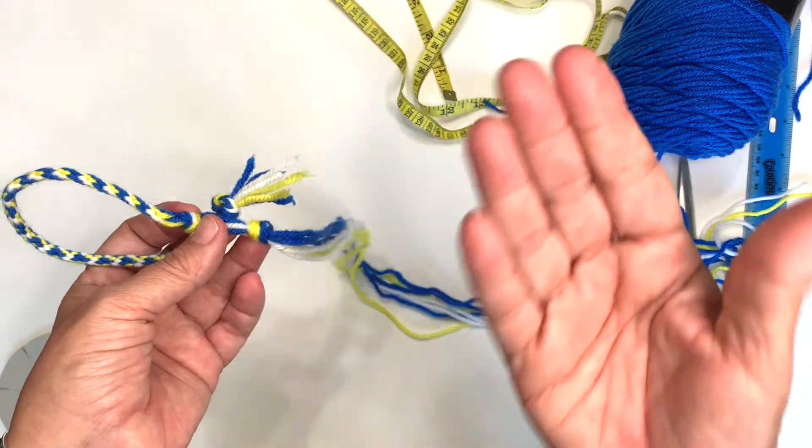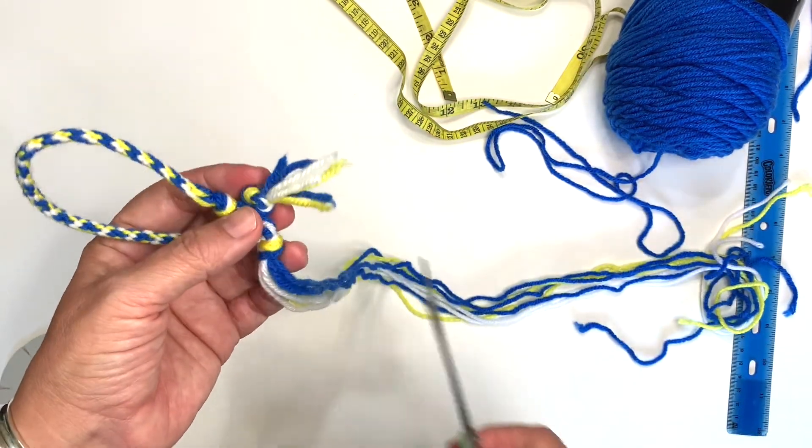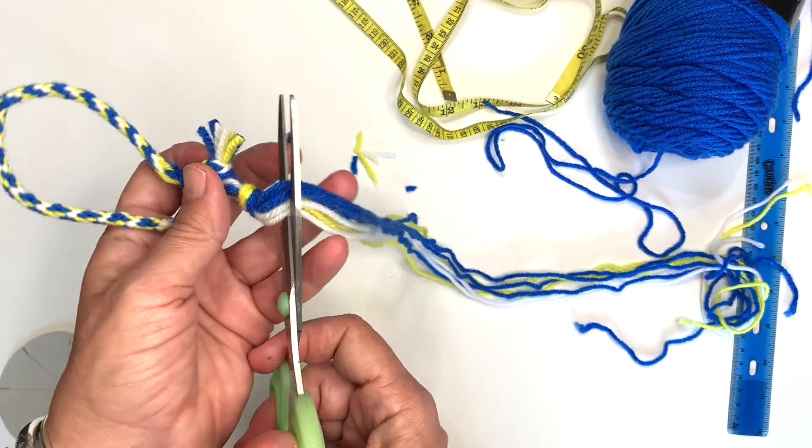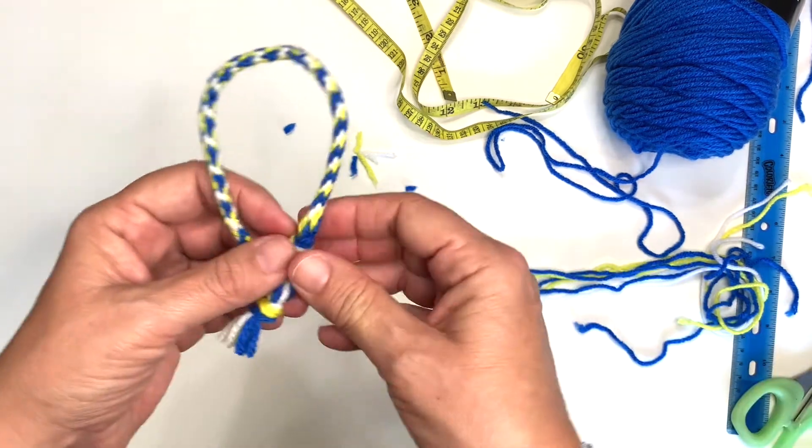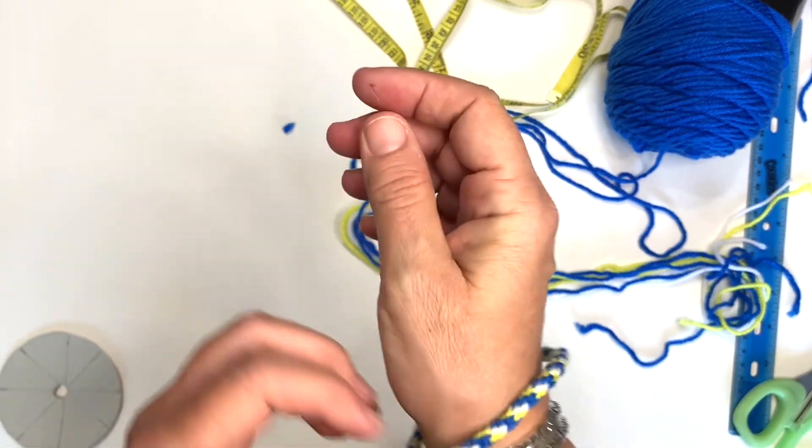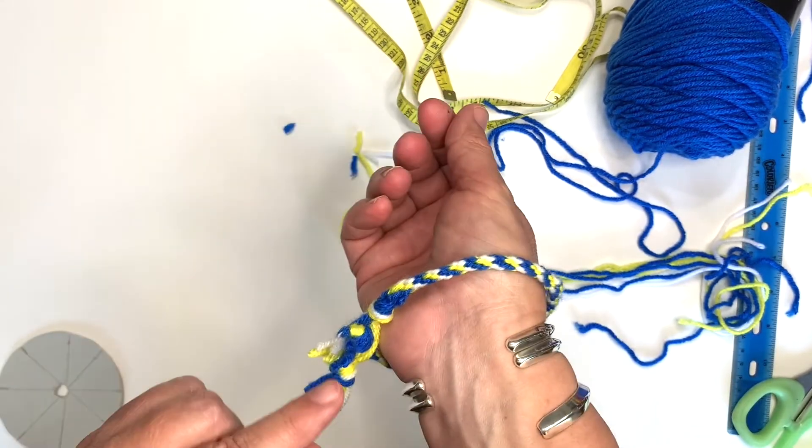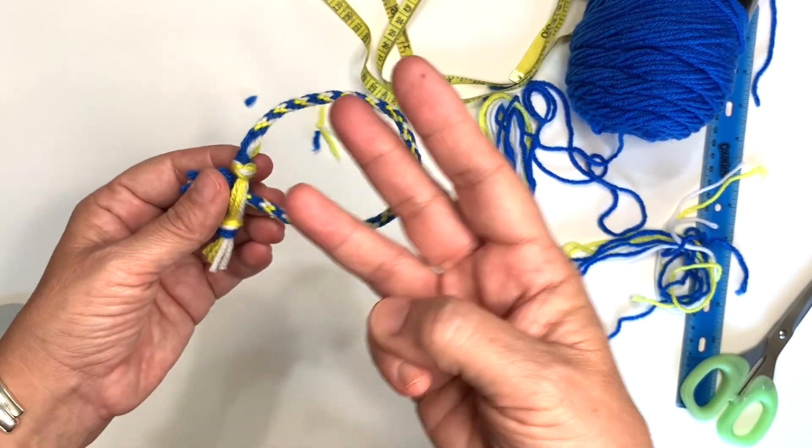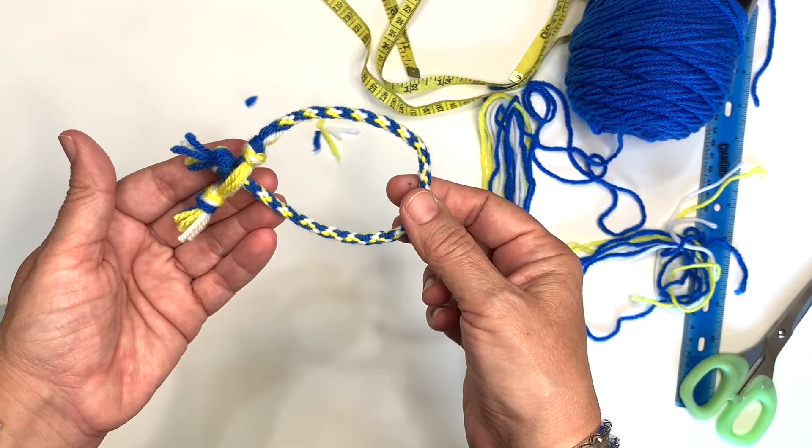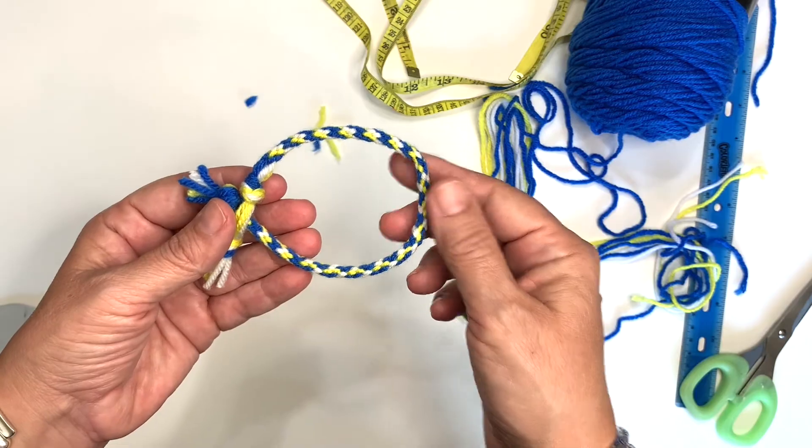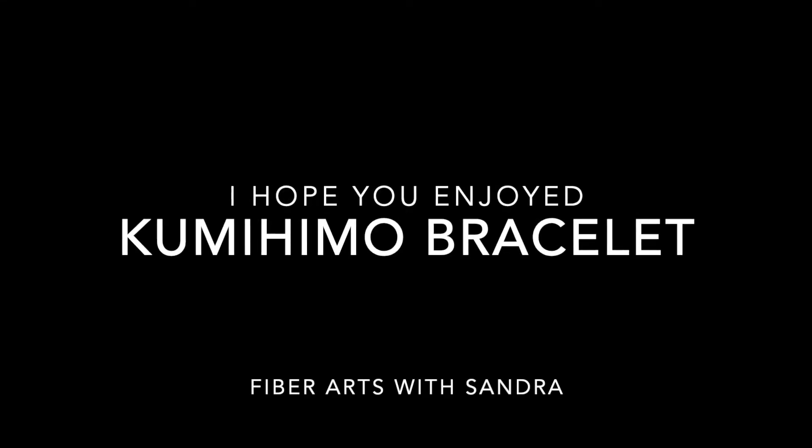Now, you can trim your ends as long as you like. I like mine to be short, so I'm going to give them a quick trim. Now, I have my kumihimo bracelet. So there we are, three different ways to finish off your kumihimo bracelet. I hope you have fun with them.